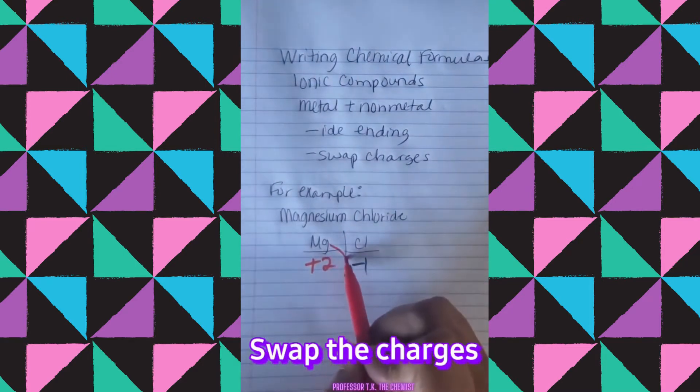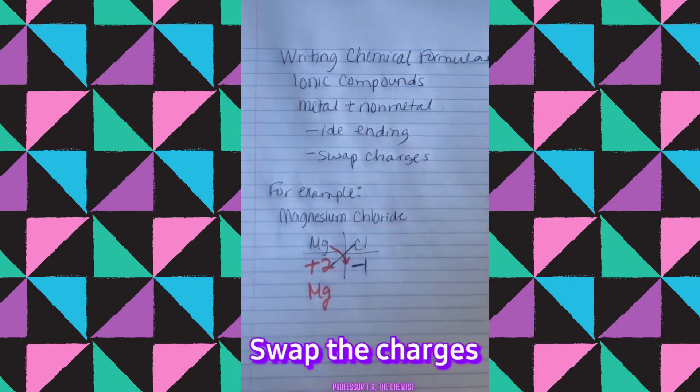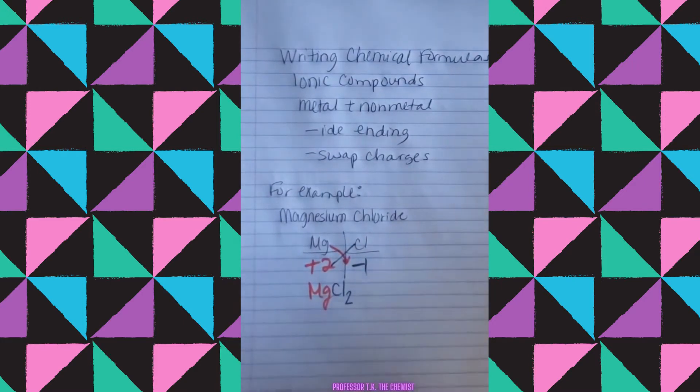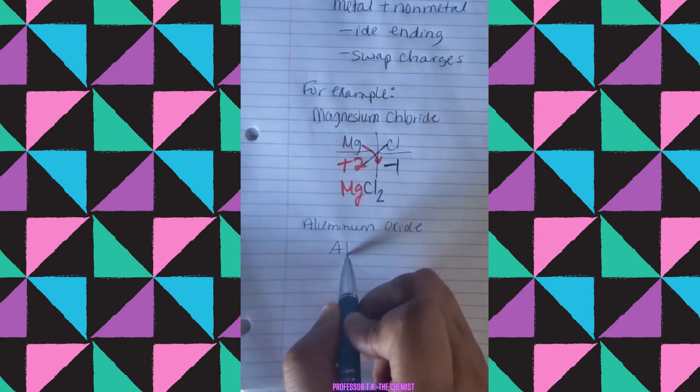So magnesium is going to take the one Mg and you don't have to write the one because the one is understood. Chlorine is going to take the two and you're going to write that as a subscript. And that's it.